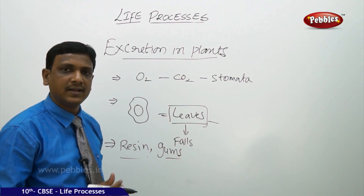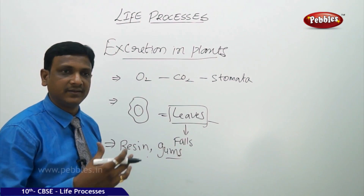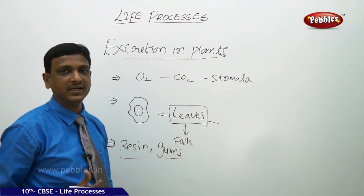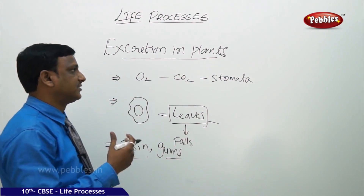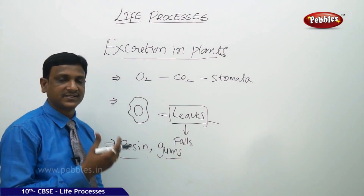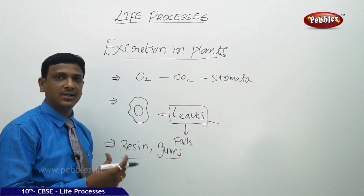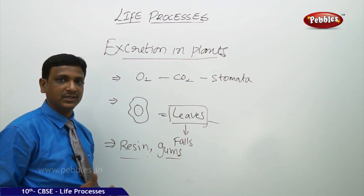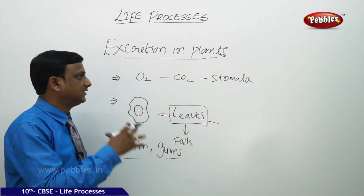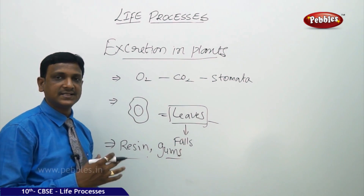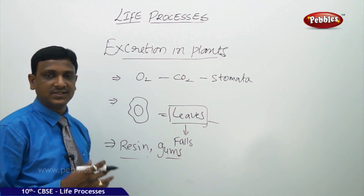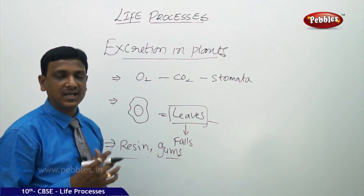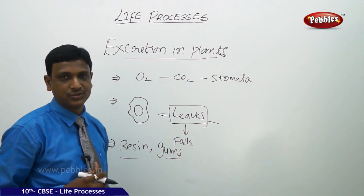In this way, plants have various mechanisms for getting rid of waste materials, but they don't have a system like kidneys or the excretory system we have seen in animals. This is how the various life processes in plants as well as animals are carried out.